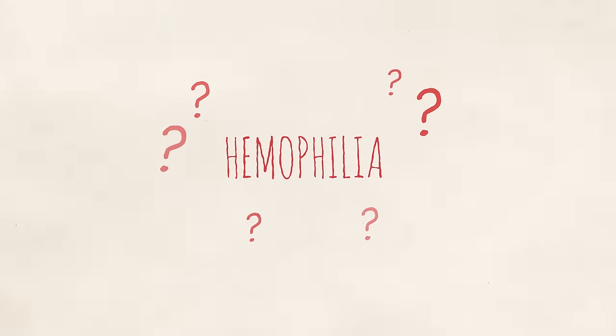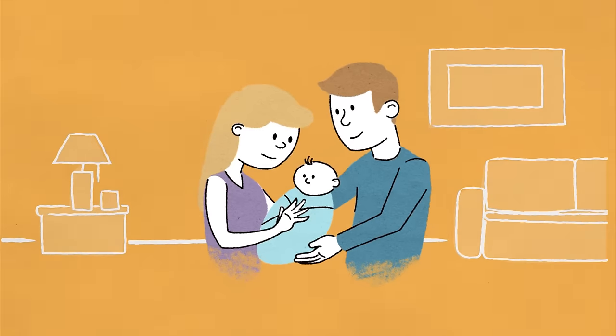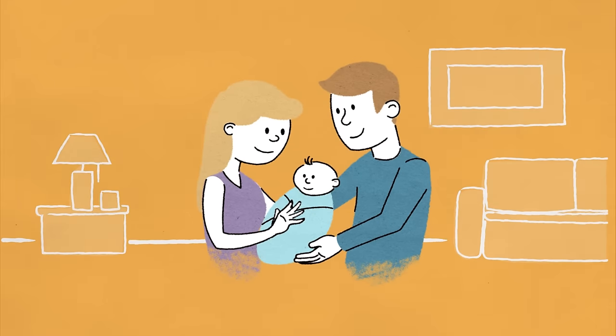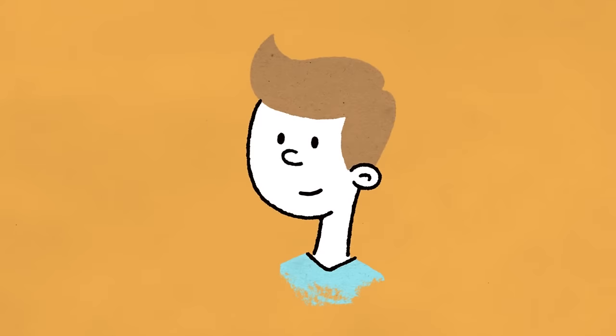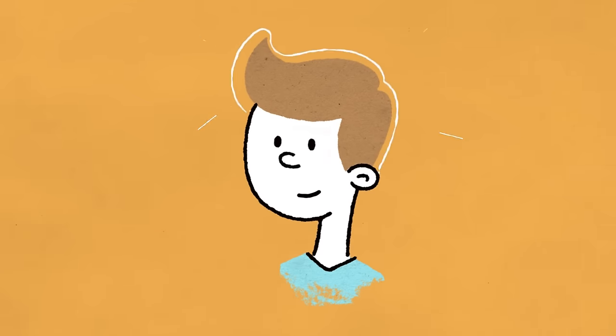So what is hemophilia? Hemophilia is a bleeding disorder, a problem with a person's blood that makes them bleed longer than a person without hemophilia. No one can catch hemophilia. It's an inherited condition you have from birth for your whole life. It's just part of who you are, like the color of your hair or the shape of your nose.